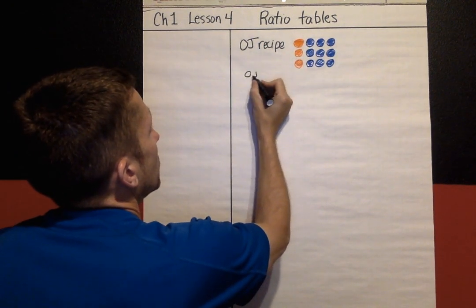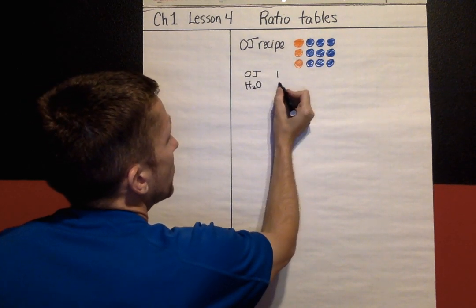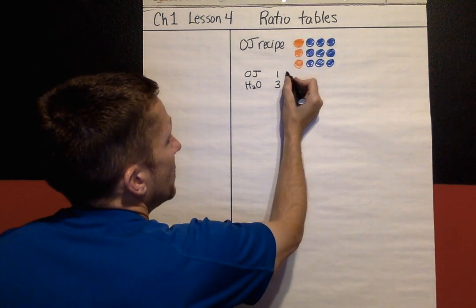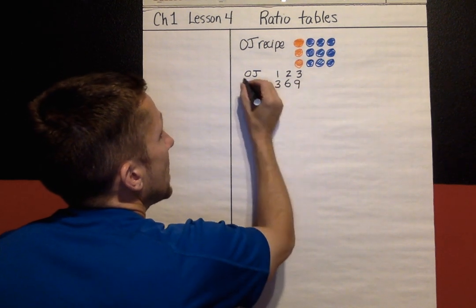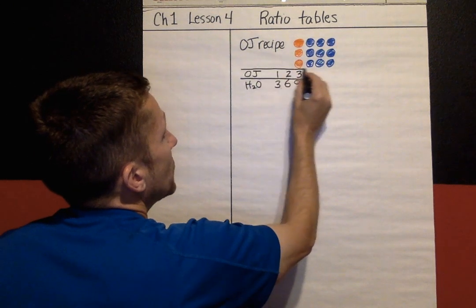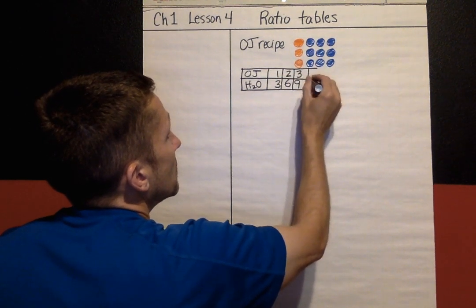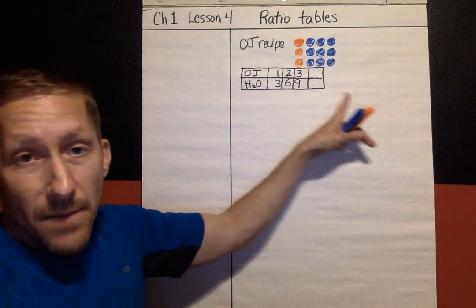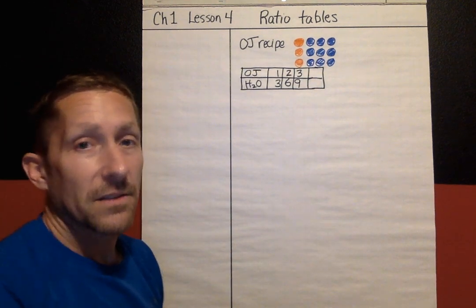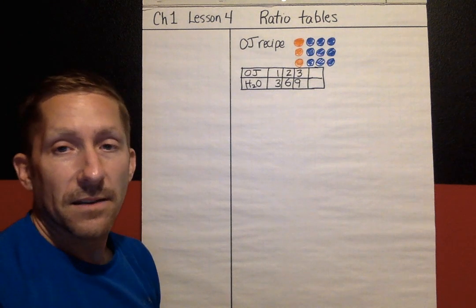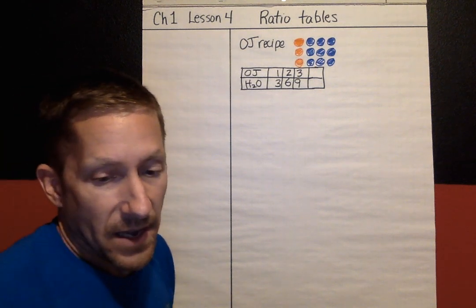I can show that recipe in a ratio table. It would look like this: OJ and water — one can of OJ, three cans of water; two cans of OJ, six cans of water; three and nine. I could keep that ratio table going — four cans of OJ and twelve waters. This is a ratio table: it's a table of ratios that are equal.